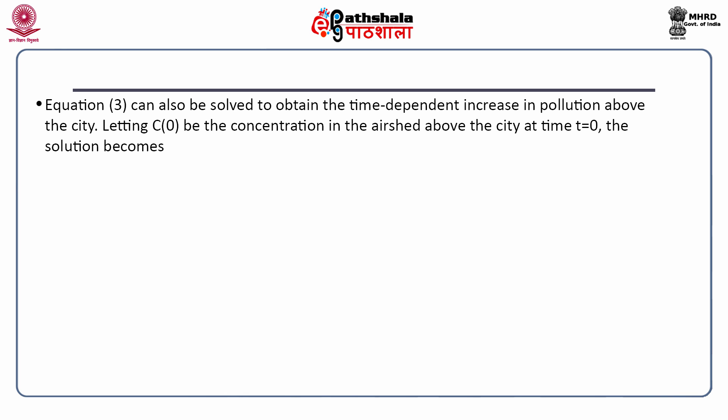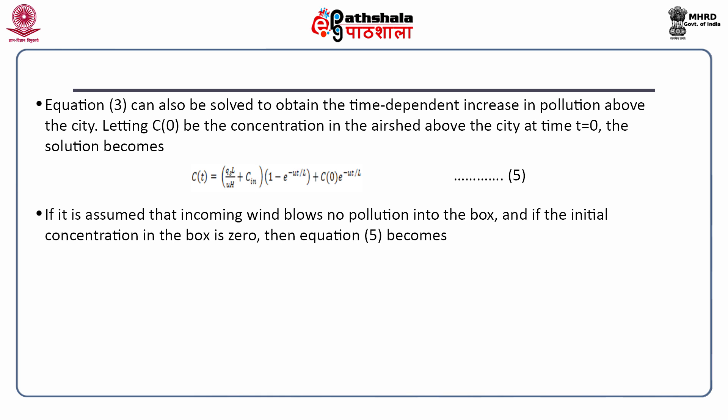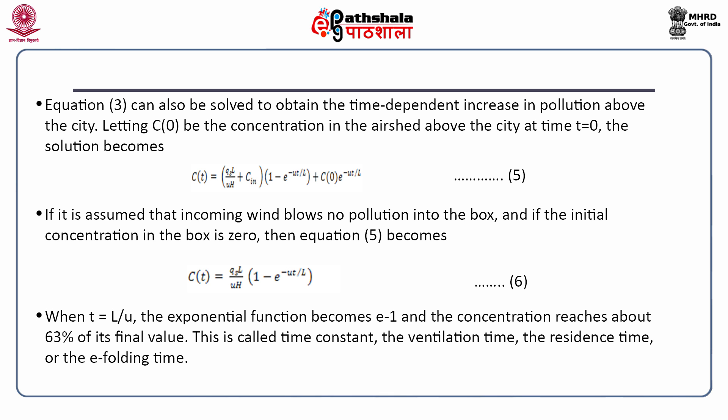Letting C_0 be the original concentration in the air shed above the city at time t equals 0, the solution becomes equation 5. If it is assumed that the incoming wind brings no pollution into the box and the initial concentration in the box is 0, then equation 5 becomes equation 6. When t equals L/U, the exponential function becomes e^(-1) and the concentration reaches about 63 percent of its final value. This is called the time constant, the ventilation time, the residence time, or the e-folding time.